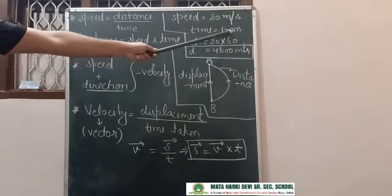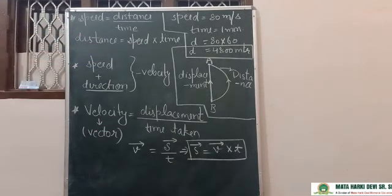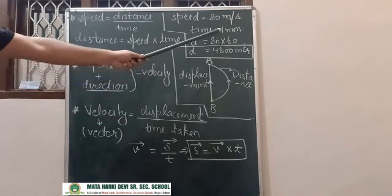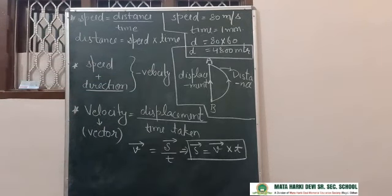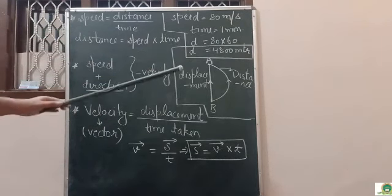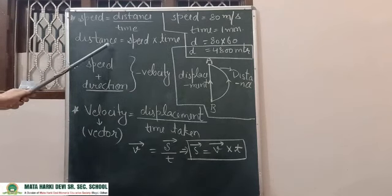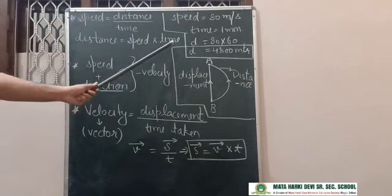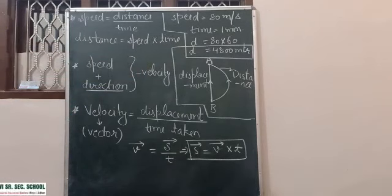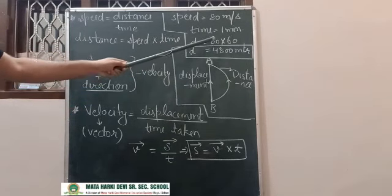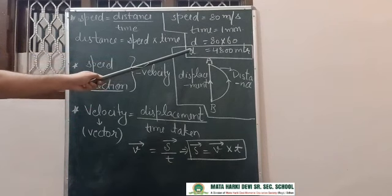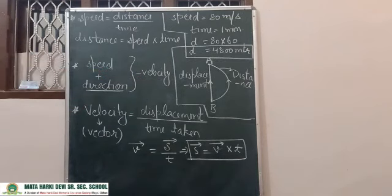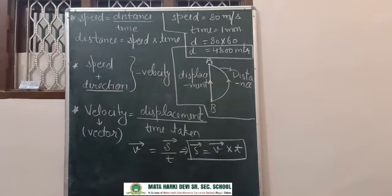We need to convert the minute into seconds for the calculation. One minute equals 60 seconds. Now calculate distance: distance is equal to speed multiplied by time. Speed is 80 metres per second and time is 60 seconds. Multiplying these gives distance equal to 4800 metres.